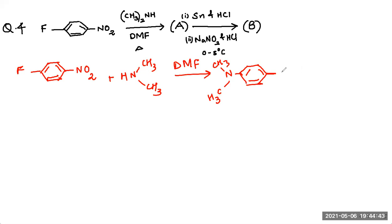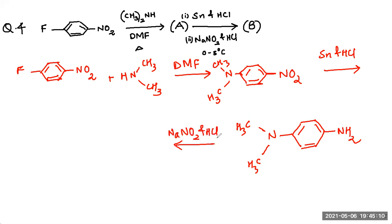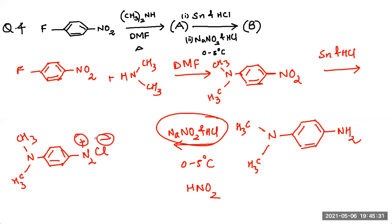And NO2 will be as it is. Now Sn and HCl will attack the nitro and it will convert nitro to aniline. And we all know aniline with sodium nitrite and HCl at 0 to 5 degrees centigrade, which will actually react to give us nitrous acid, will give benzene diazonium salt. So this is what the reaction will be.